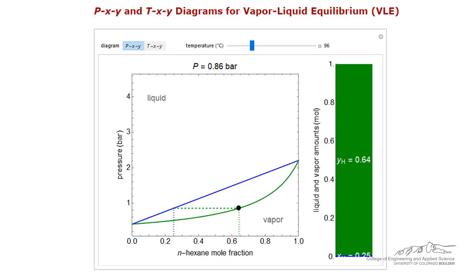Further reductions in the pressure do not change the composition of the mixture. The mixture is superheated vapor when the dot is below the green curve.